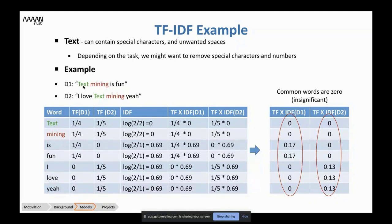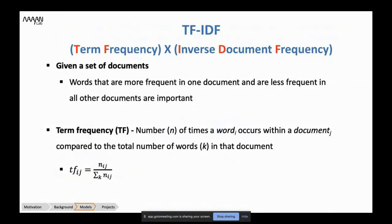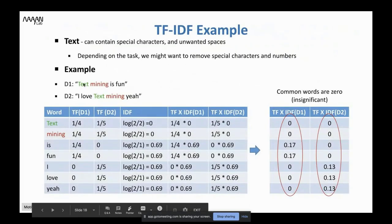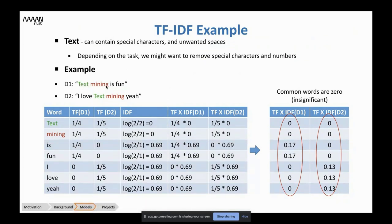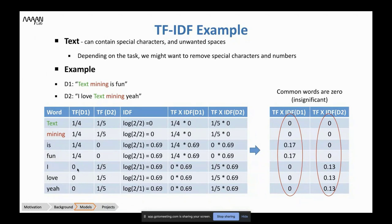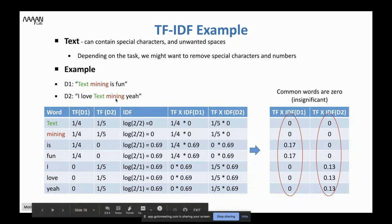Let's compute the TF. Term frequency is just a count. For D1, I see the word 'text' once and there are four words in the document, so it's 1/4. The same goes for 'mining' — it appears once in the first document out of four words. For words like 'I,' 'love,' and 'yeah' — they are in the second document but not the first, so their TF in D1 is zero. For D2, I have five words, so I divide the count of each word by five.